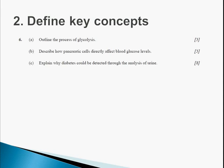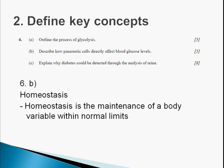Two is to define key concepts. Let's look at question 6b in this particular example. Describe how pancreatic cells directly affect blood glucose levels. What's a key concept in here? It's homeostasis. So, let's define homeostasis. It's the maintenance of a body variable within normal limits. This will give you one mark. Just remember to define key concepts within the question.